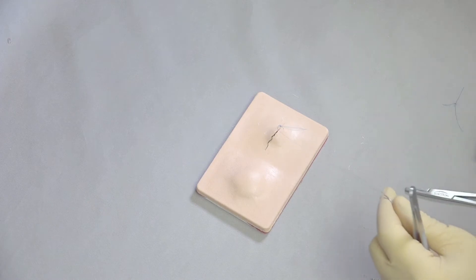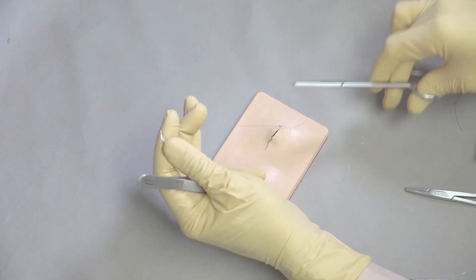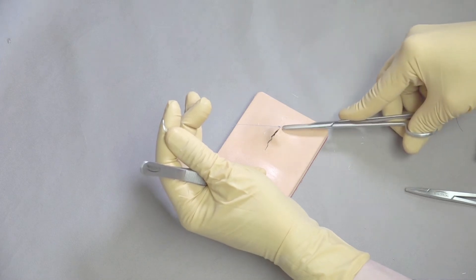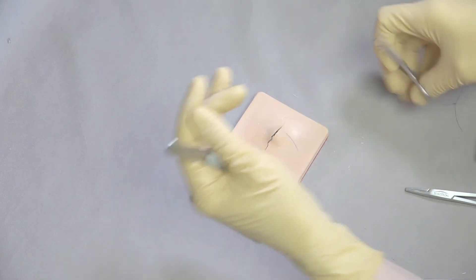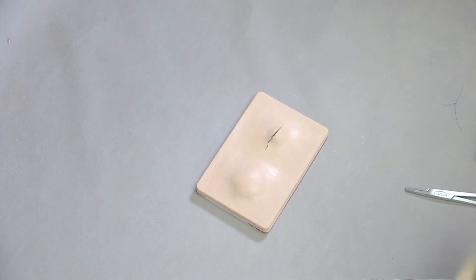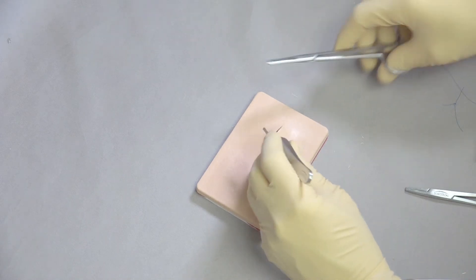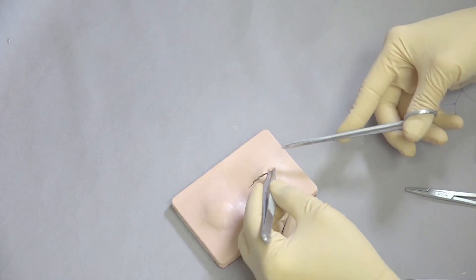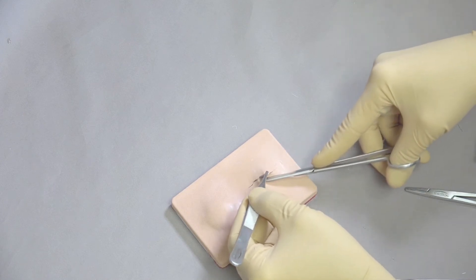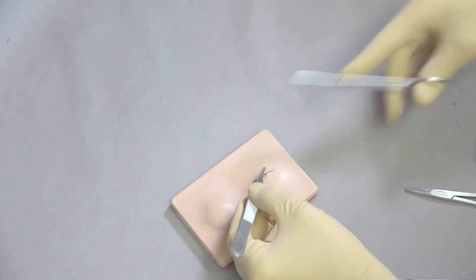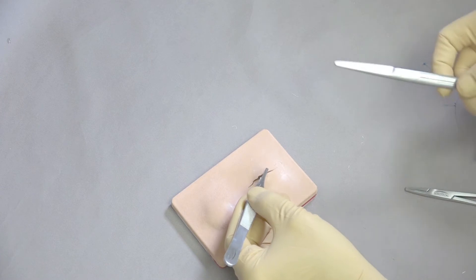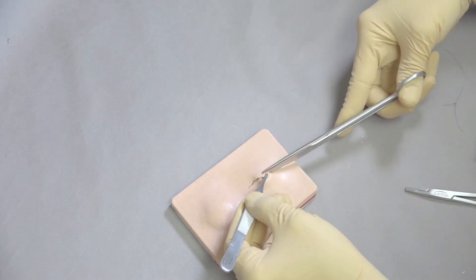If we have extra tissue that we aren't happy with and we don't want to leave that behind, we can trim that and close. So one option would be to practice now doing some reconstructive surgery with this pad. And to look at it and say we've got this extra tissue here. So if I remove this extra bit in the middle of the cyst here.